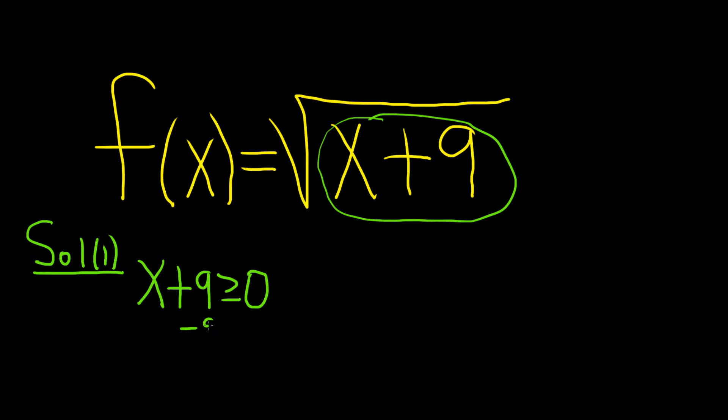Then you can subtract 9 from both sides. So minus 9, minus 9. So we have x greater than or equal to minus 9.